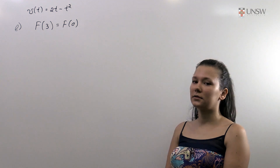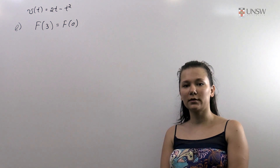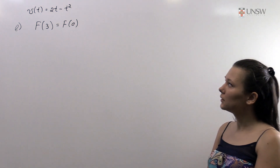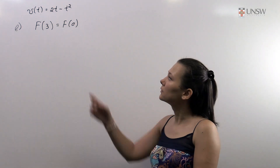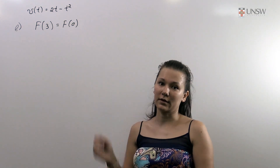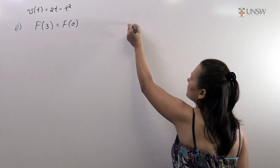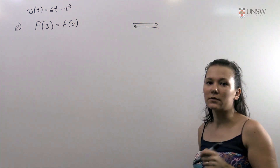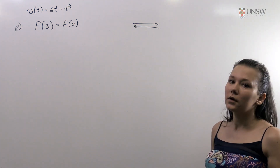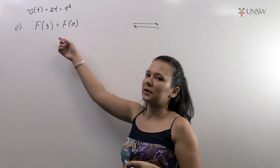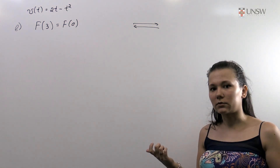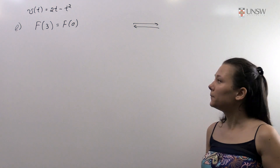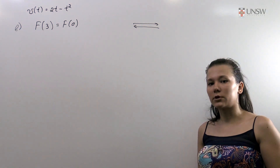In the second part of this question we need to find the total distance traveled by our particle in three seconds. From the first part we know that our particle moved and returned to the same point as the starting point at t equals 3. So our particle moved somewhere and then went back to exactly the same point. Although the distance between f(0) and f(3) is zero, the total distance traveled cannot be zero because the velocity is not equal to zero.